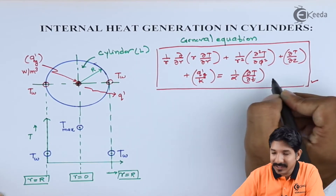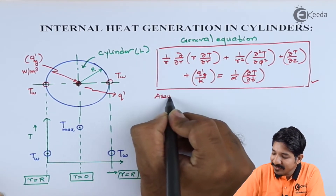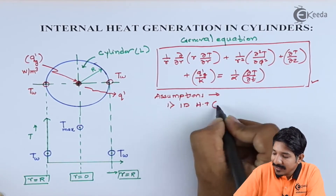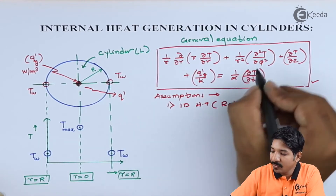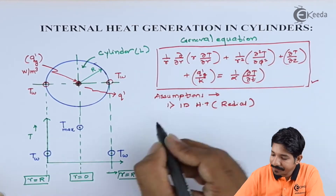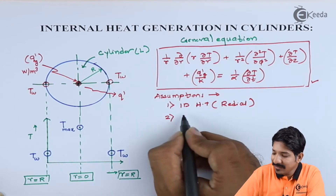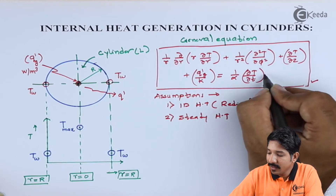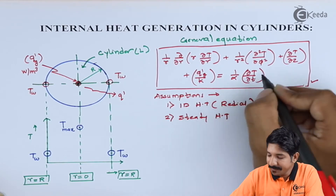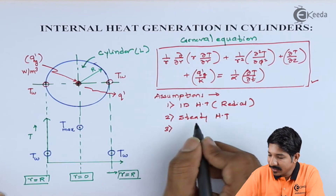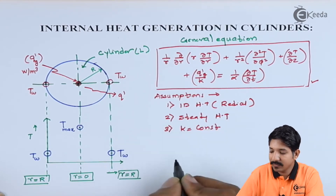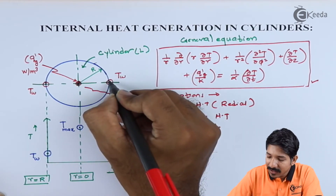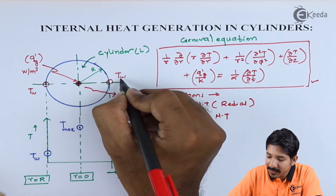For deducing this equation, the assumptions that need to be considered: first, one-dimensional heat transfer that is only radial — this will negate the second and third terms. Second, steady-state heat transfer — this will cancel out the ∂T/∂t term. Third, K is constant.